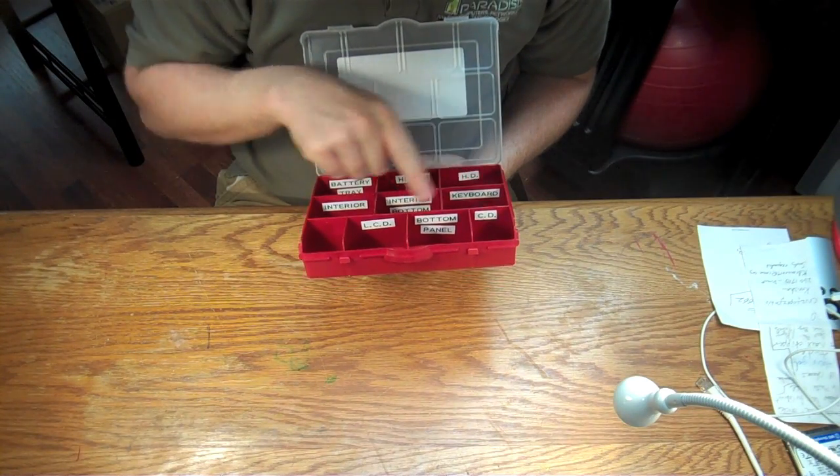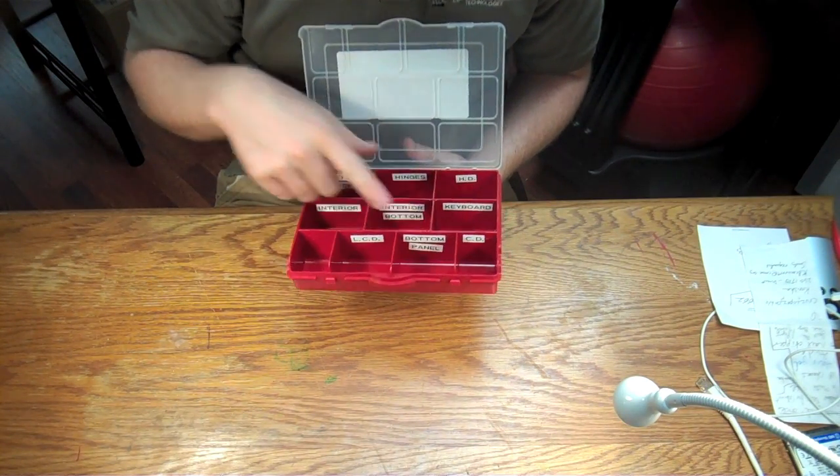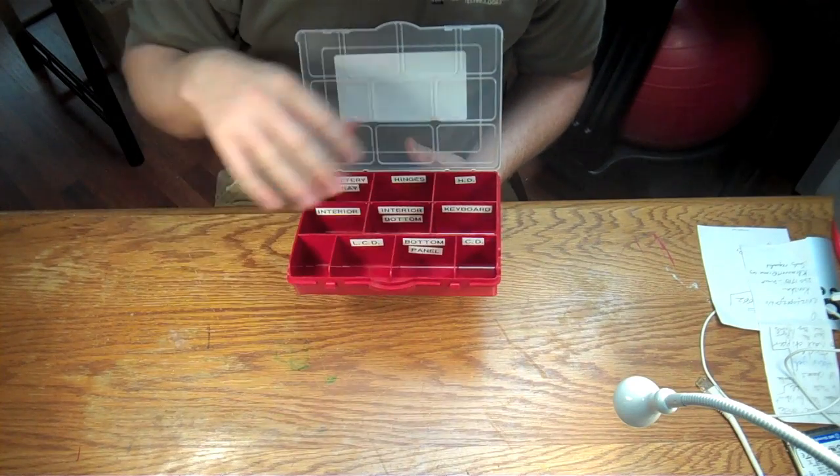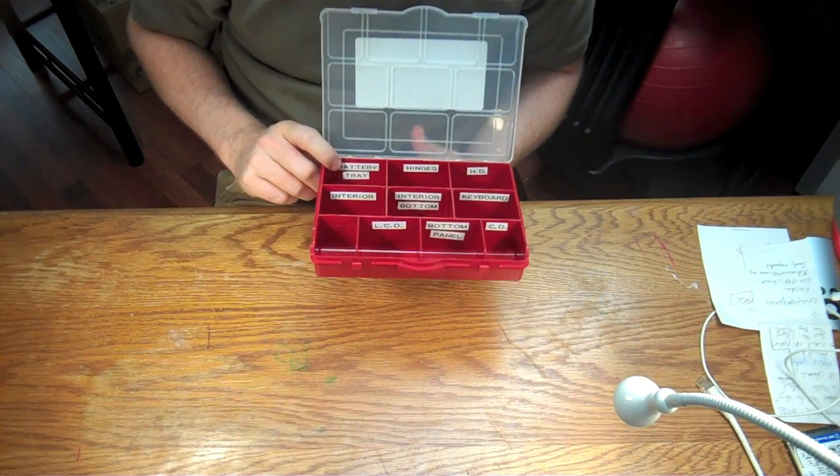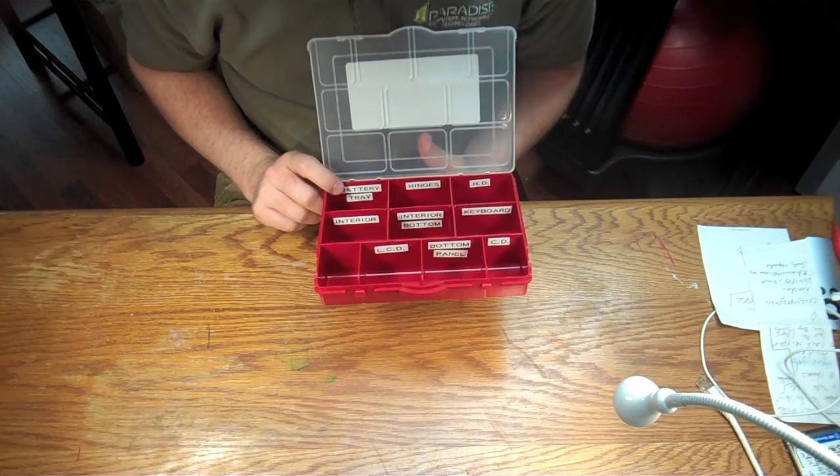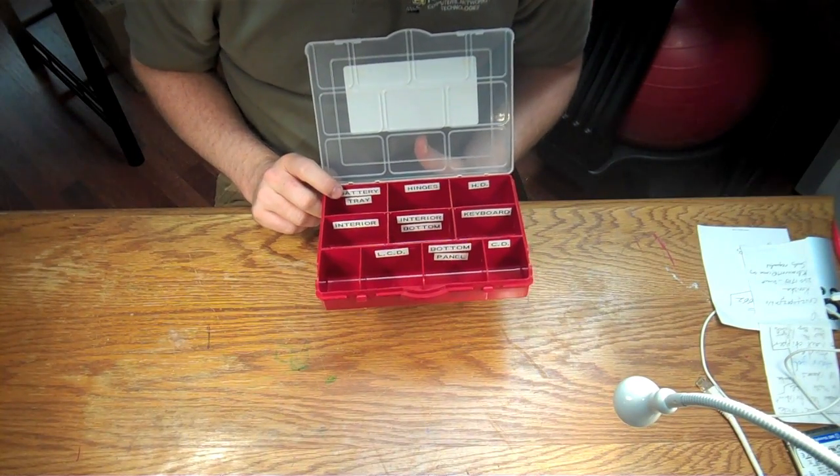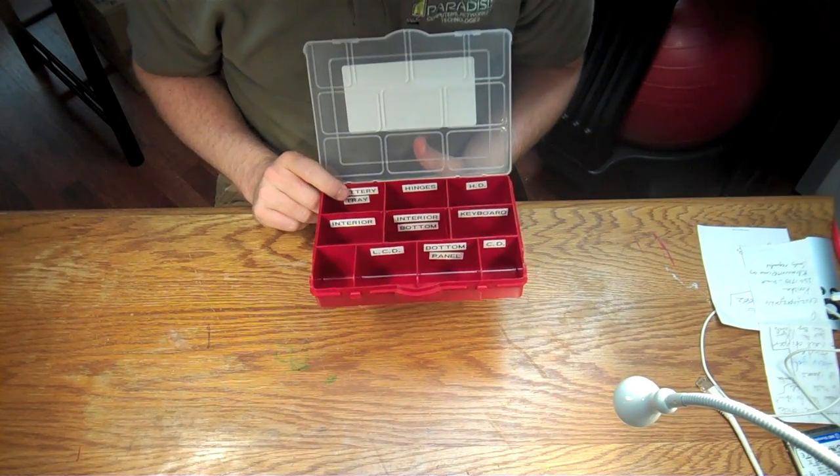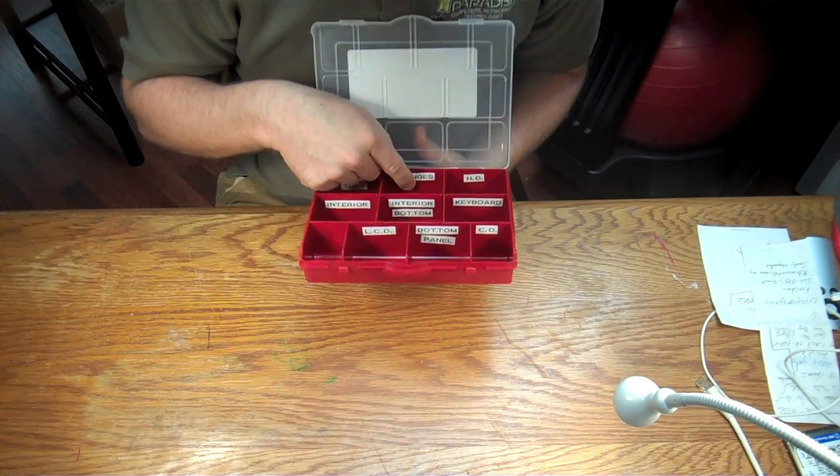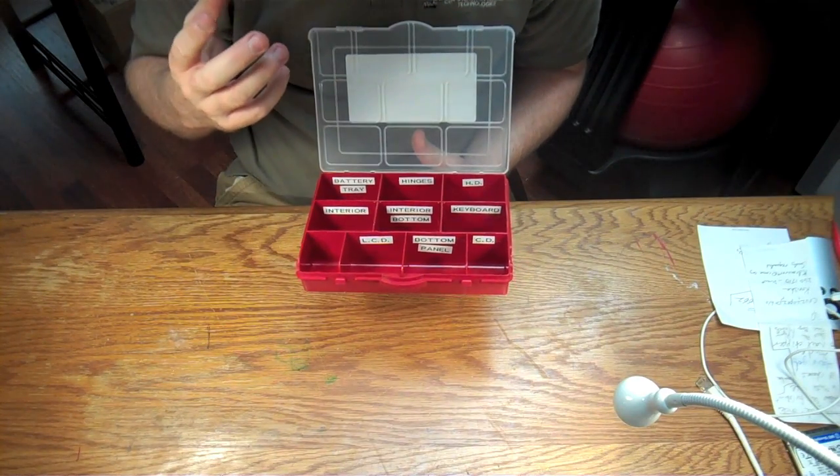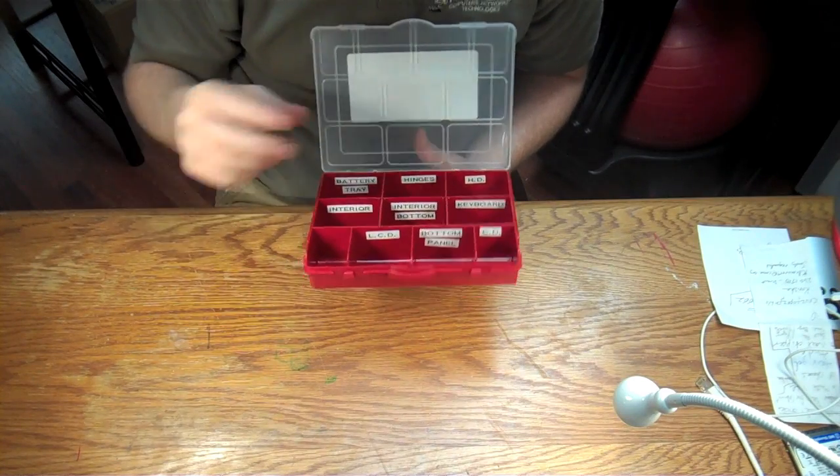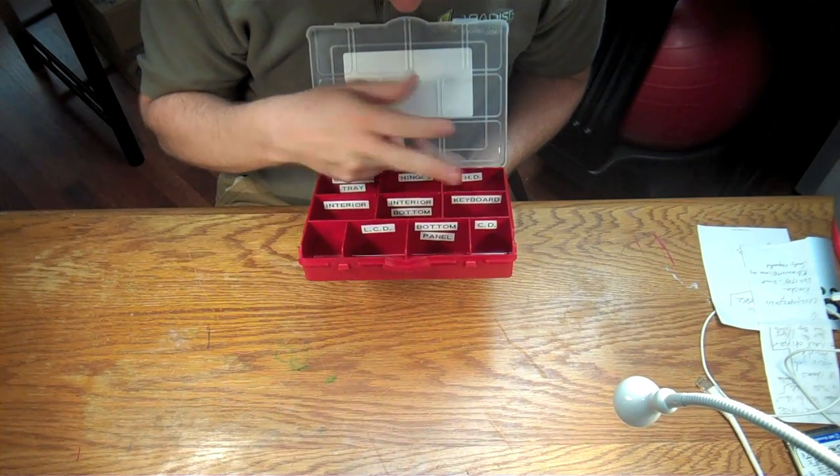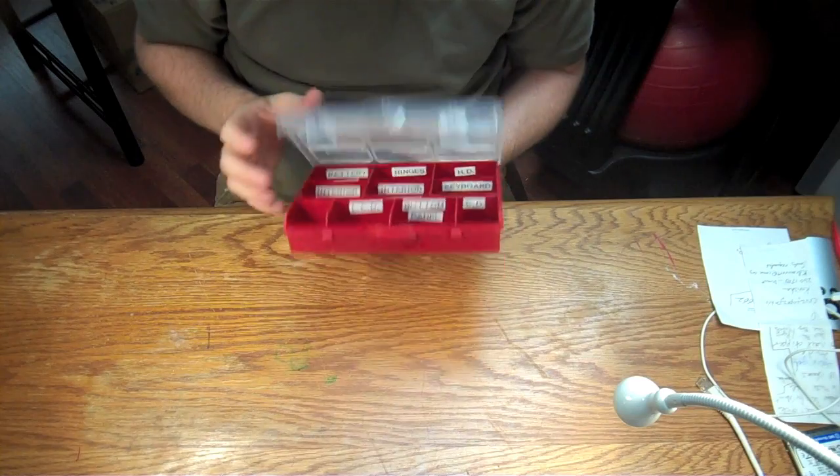Bottom panel is all the screws on the bottom panel itself, excluding the battery tray. The battery tray will always have a few screws in it, sometimes three, sometimes five. Hinges, pretty self-explanatory. Anything that comes out of the hinge area for the LCD would go there. Keyboard screws, that makes sense. CD makes sense. Hard drive makes sense.